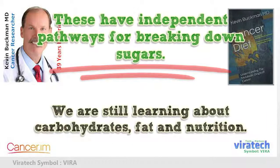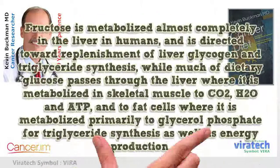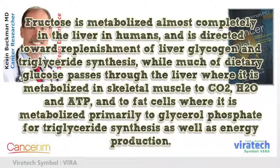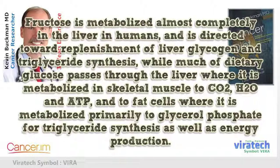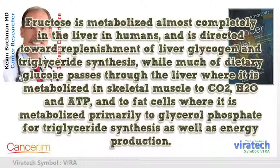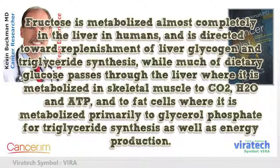Fructose is metabolized almost completely in the liver in humans, directed toward replenishment of liver glycogen and triglyceride synthesis. Much of dietary glucose, by contrast, passes through the liver and is metabolized in skeletal muscle to CO2, H2O, and ATP, and in fat cells primarily to glycerol phosphate for triglyceride synthesis as well as energy production.